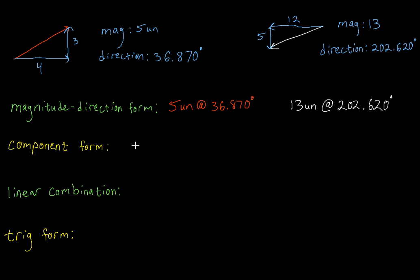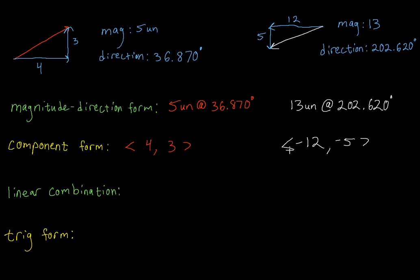Then you've got the component form — again, very aptly named. For component form, we're going to write down the x component and then the y component. For this red vector, our x component is 4 to the right, so it is positive 4, and 3 up — to the right is positive, up is positive, so we've got positive 4, positive 3. For this white vector, I'm traveling 12 units to the left, so we've got to put negative. Then I'm traveling 5 units down, so we have to make sure we put a negative there. While these two forms look very different, they describe the exact same vector, and each form has its benefits. In magnitude-direction form I can quickly see the magnitude and the direction, and in component form I can quickly say how far to the right or left, and how far up or down, to go from the initial point to the terminal point.